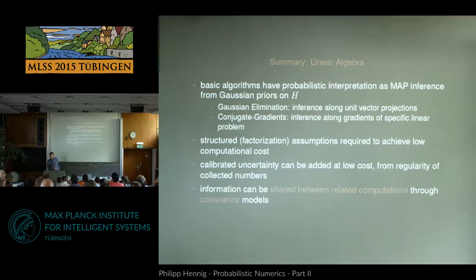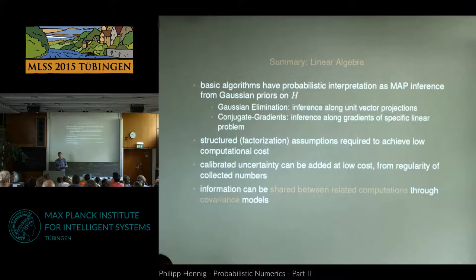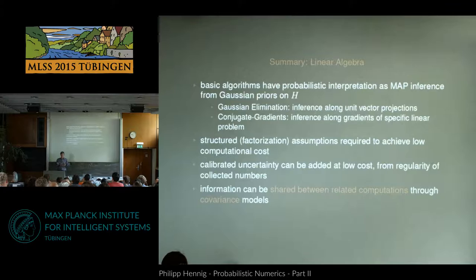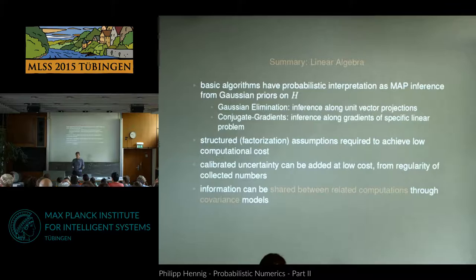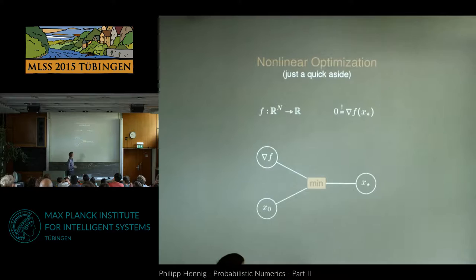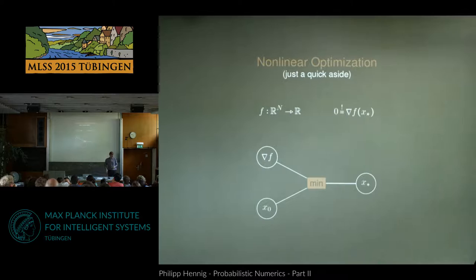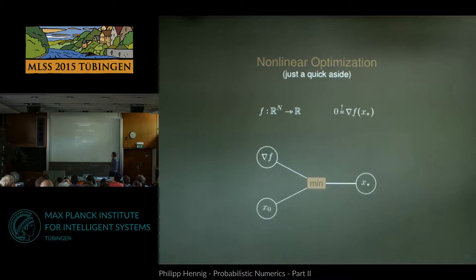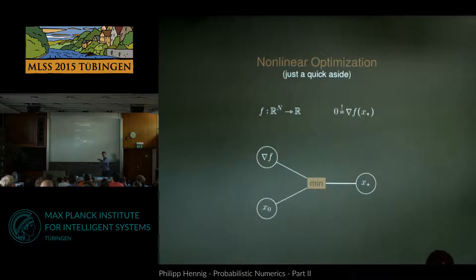Now I'll move on. There's a question about preconditioning: it would be nice to say it's just changing the prior mean, but preconditioning involves rescaling the entire space, so it actually involves changing both the prior mean and prior covariance in a particular way. But it is essentially using prior information to simplify the problem. I won't say much about nonlinear optimization since Steve Boyd gave a wonderful talk about that. I'll just point out that in finding the root of a gradient of a nonlinear function, there is a family of quasi-Newton methods that estimate the Hessian or inverse Hessian. The most famous is BFGS, which can be written as a filter and interpreted as a particular Gaussian inference rule. If you run BFGS on a quadratic function, it is exactly equal to conjugate gradients.